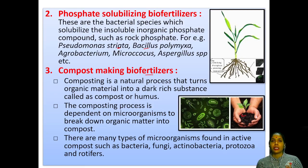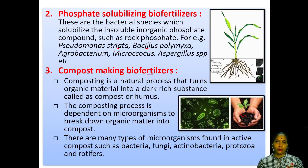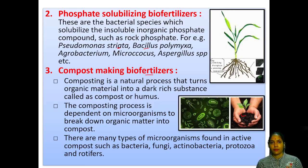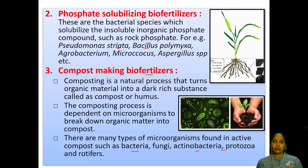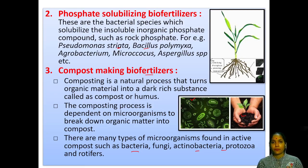Phosphorus is found in the environment in insoluble form and must be solubilized to be available to plants. Bacterial species that solubilize insoluble inorganic phosphate compounds such as rock phosphate include Pseudomonas, Trichoderma, Bacillus polymyxa, Agrobacterium, Micrococcus, and Aspergillus species (a fungus). These bacteria make phosphorus available in solubilized liquid form so plants can absorb it.